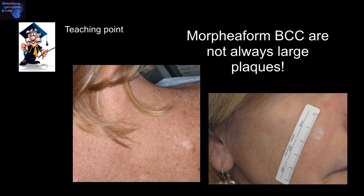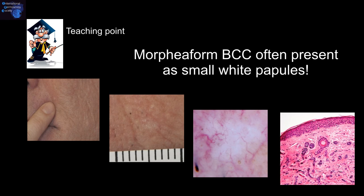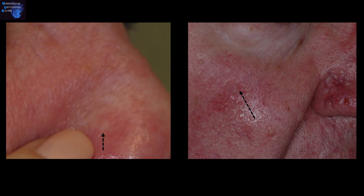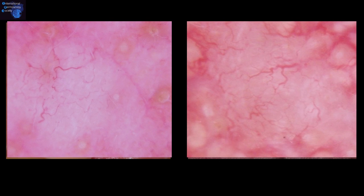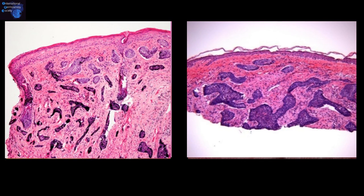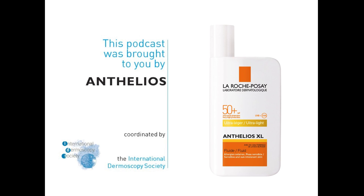An important teaching point is that morpheaform basal cell carcinomas are not always large plaques. Here we have an example of a white papule — a morpheaform basal cell carcinoma presenting as a small white papule. Two examples of small white papules clinically and dermoscopically show the milky white appearance with serpentine branch vessels, and an infiltrative pattern on pathology. To be continued.